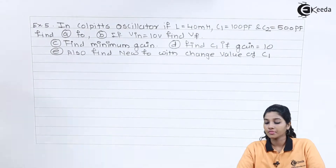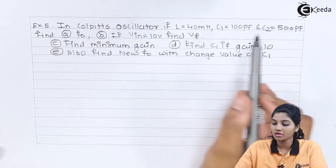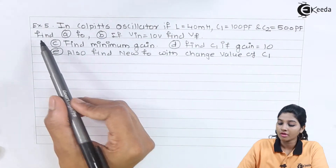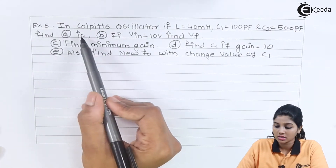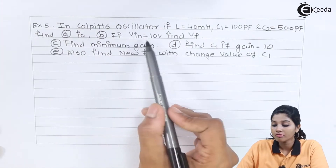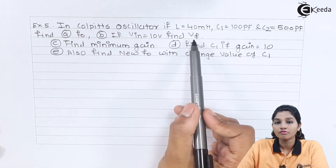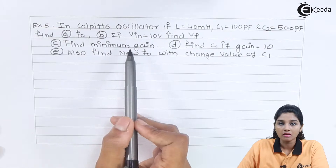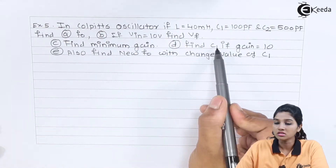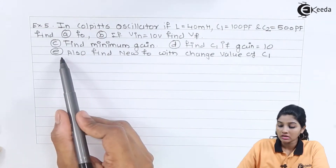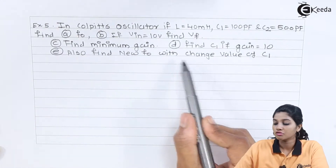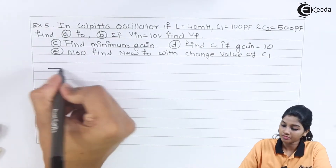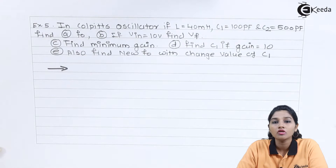The statement of Problem 1: In a Colpitts oscillator, L = 40 mH, C1 = 100 pF, C2 = 500 pF. Find (a) frequency of oscillation f0, (b) if Vin = 10 V, find feedback voltage Vf, (c) find minimum gain, (d) find C1 if gain is 10, and (e) find new frequency of oscillation with changed C1.